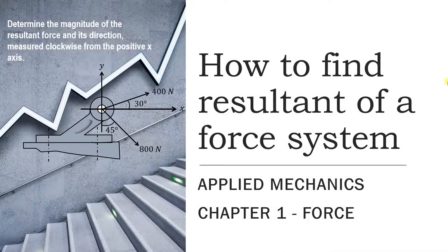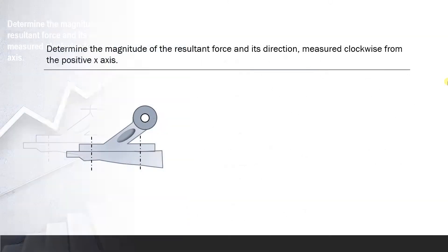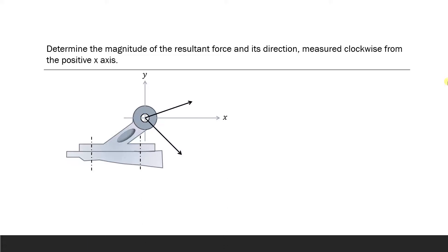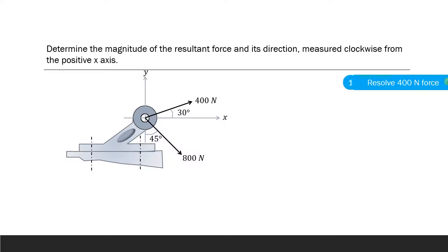In this video we'll try to understand how to find the resultant of a force system. The problem shows various forces acting on a bracket: a 400 Newton force acting at 30 degrees to the positive x-axis, and an 800 Newton force acting at an angle of 45 degrees to the y-axis. We have to resolve these into rectangular components of x and y.